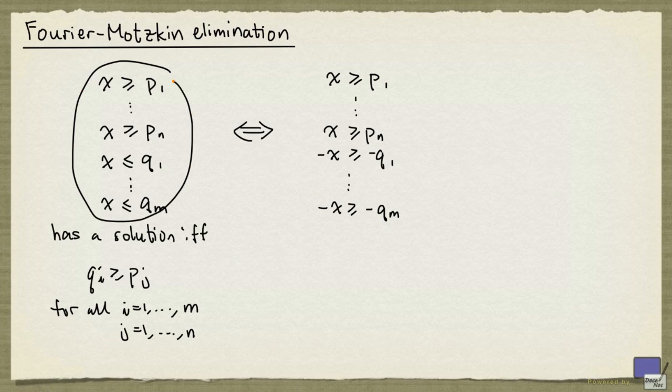Recall that this system here has a solution if and only if these inequalities hold. In other words, each of these upper bounds is at least each of these lower bounds. So there are going to be m times n inequalities here.